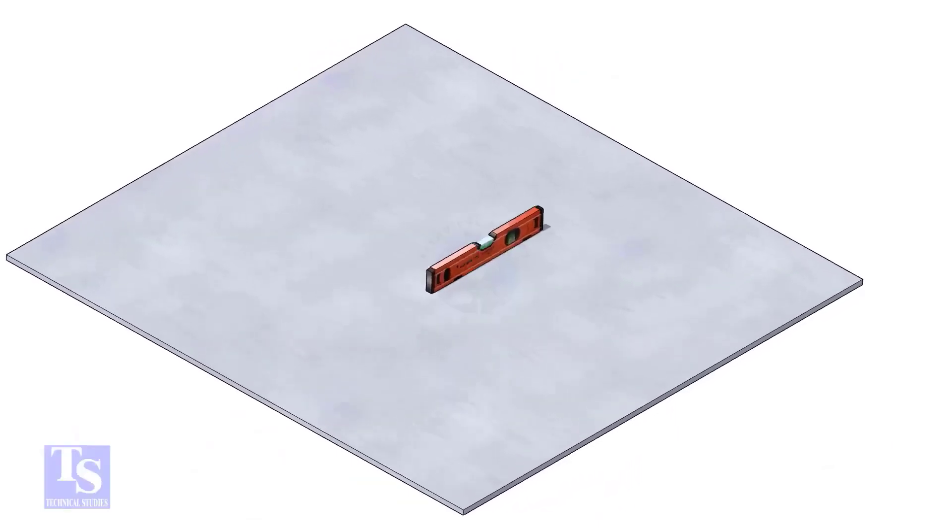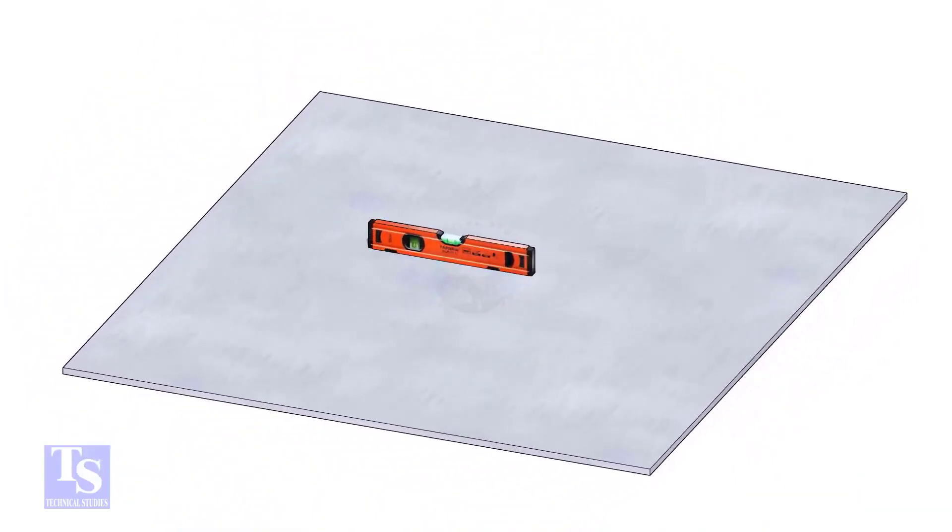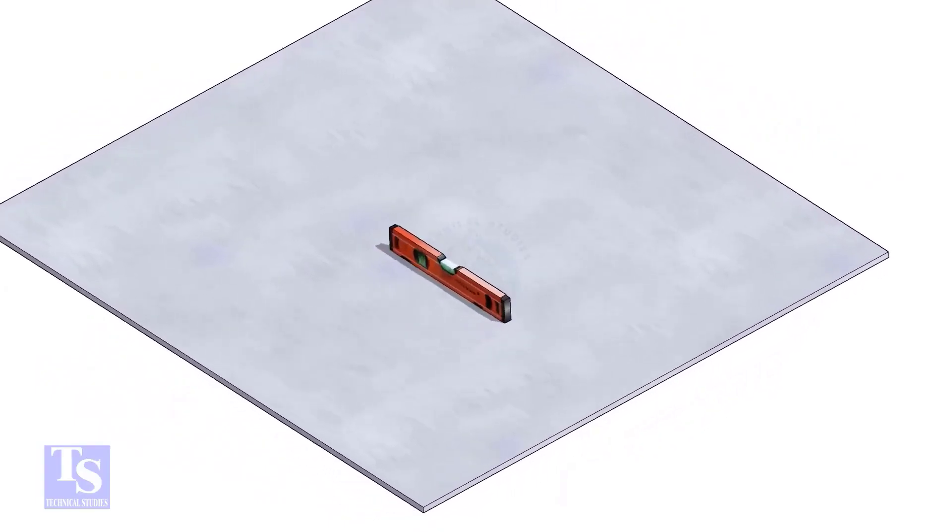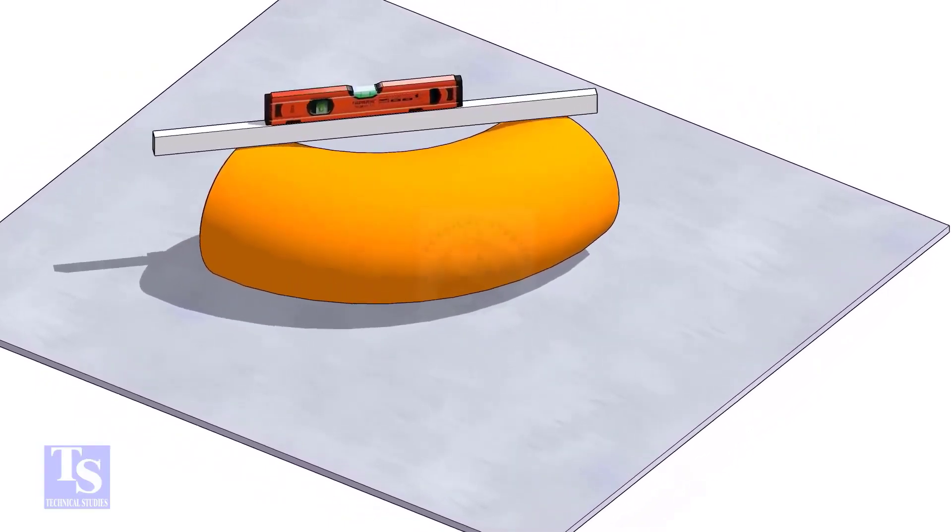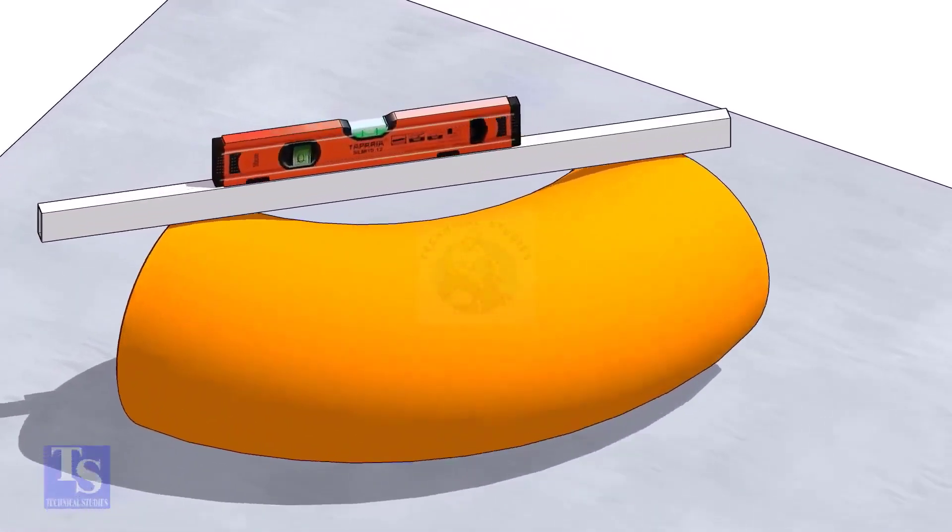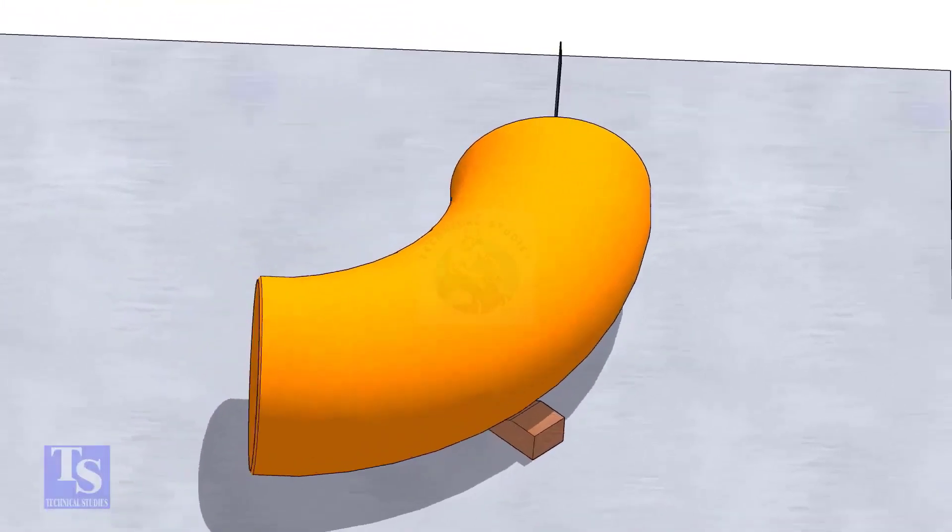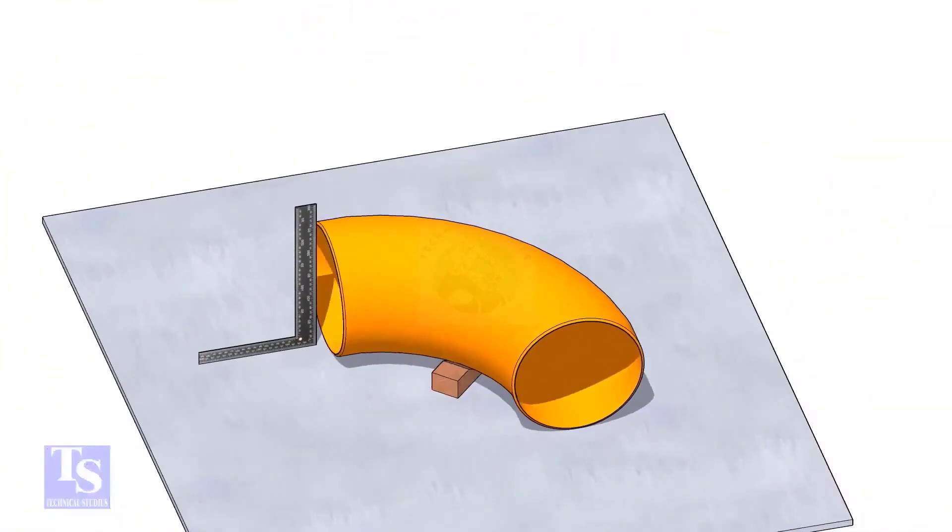Let us mark the center of the elbow. Choose a leveled plate and put the elbow on it. Check the level of the elbow. Check the squareness of the face of the elbow with the plate. If necessary, put some packing below as shown.